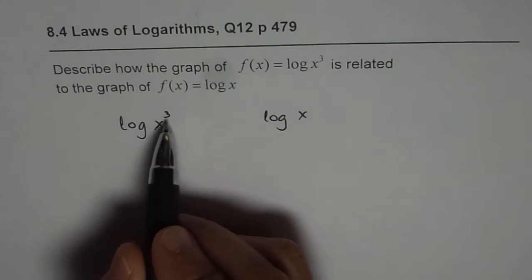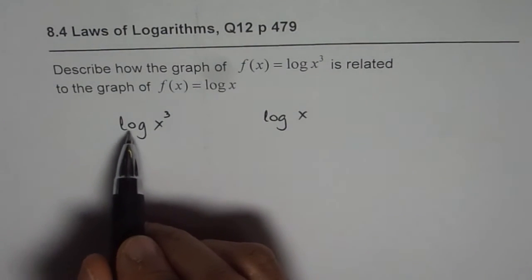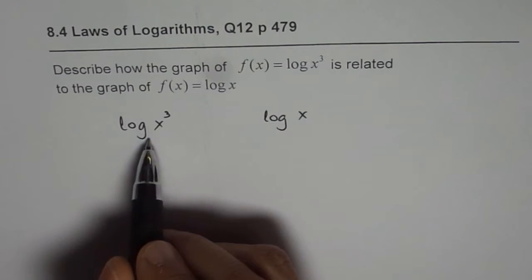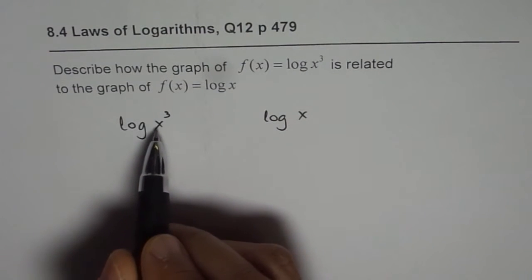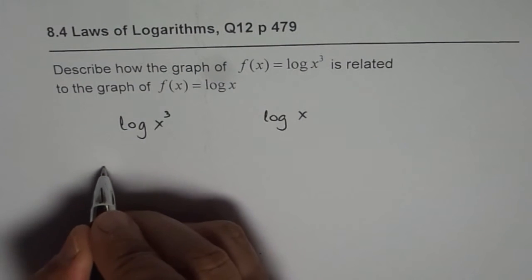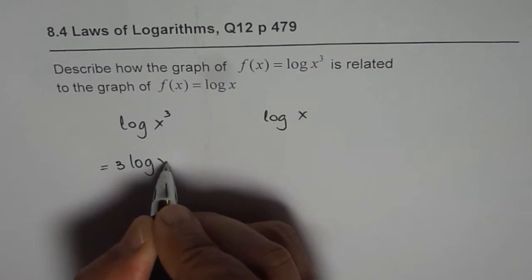Now you can apply the power law for log to the base 10. If nothing is written there, it's base 10. Log x³ is equal to 3 times log x.